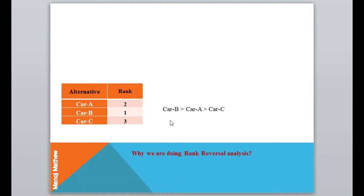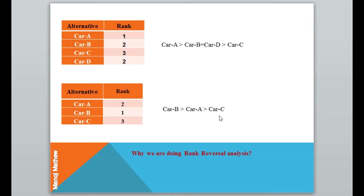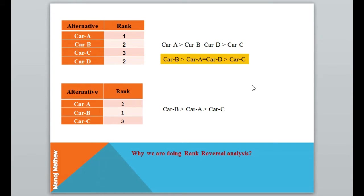You land up with a rank in which car B is better than car A, and car A is better than car C. Then a company launches another car, car D, with almost the same specification as car A. When you add that alternative in the decision matrix, you get a new rank: car A is better than car B, and both are better than car C.